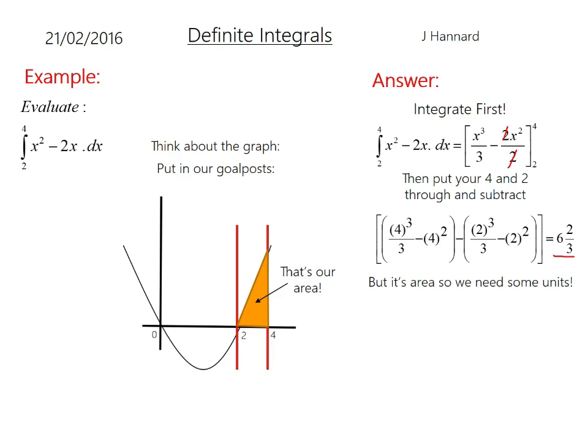But if it's area, we need some units. So we call that 6 and 2 thirds units squared. But if you're given centimetres, obviously centimetres squared. But if it literally just says that and mentions nothing about area,